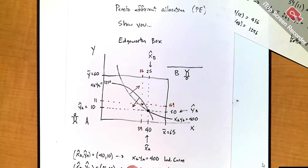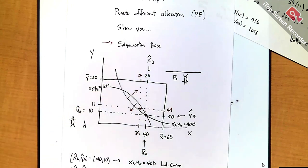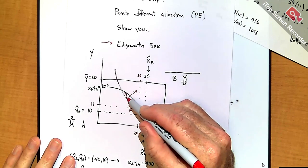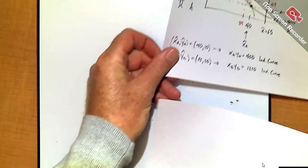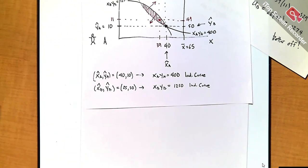The whole point of this was to identify where we get gains from trade and then see where trade will stop. Where do we have gains from trade? It would just be in this lens-shaped region here — allocations above both A and B's indifference curves. You can use this picture to get a sense of what the Pareto efficient allocations look like and then see what math characterizes them.